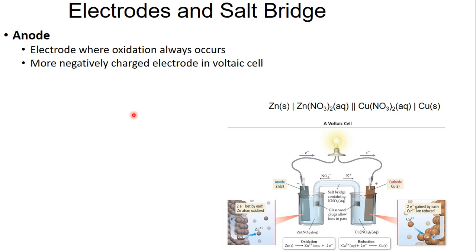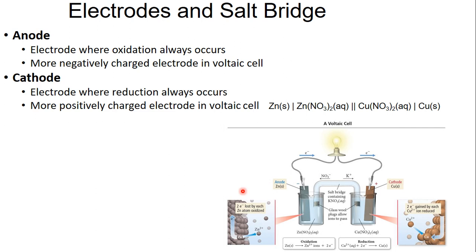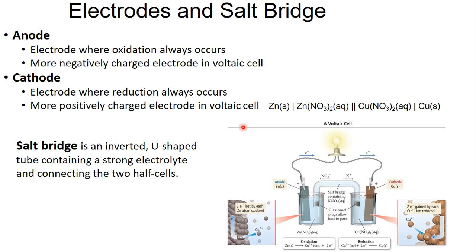Now let's look at some terminology. The anode is negative — this is where your oxidation happens, or where you lose electrons. Your cathode is where your reduction happens — your positive part, this is where you gain electrons. The salt bridge is a tube that allows you to transfer electrolytes.